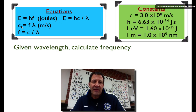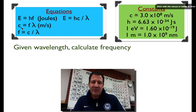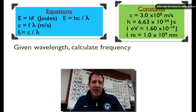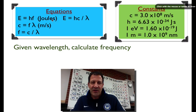We can also calculate the frequency or the wavelength using lambda, the symbol for wavelength, and the equation C equals frequency times wavelength, where C is the speed of light: 3.0 times 10 to the 8 meters per second. A third equation comes from solving for F and substituting into the first equation, giving us energy equals H times C divided by the wavelength.